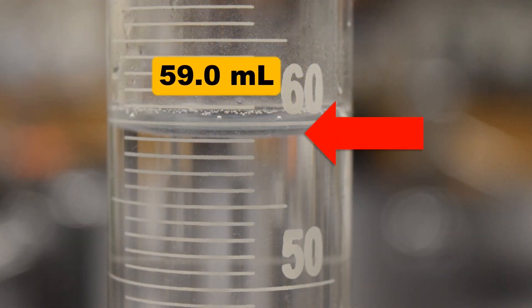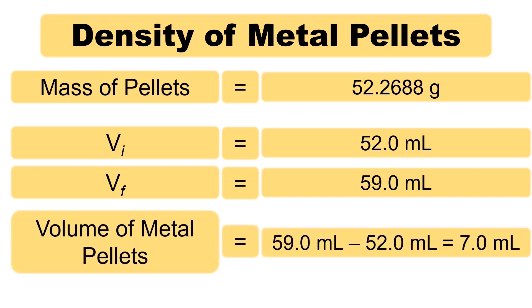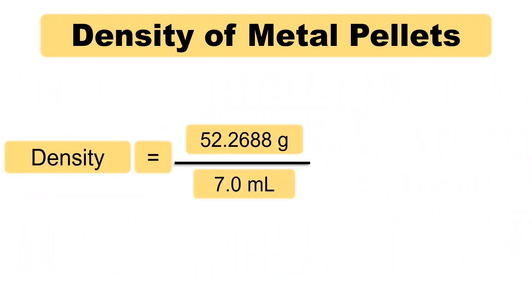Notice that the water level rises because of the volume occupied by the metal pellets. Measure the final volume, which consists of the water plus the volume of the metal pellets. Simply subtract the initial volume of water, and we can obtain the volume of the metal pellets. When subtracting the volumes, be sure to follow the significant figure rules. Then use the significant figure rules to find the density of the metal pellets.